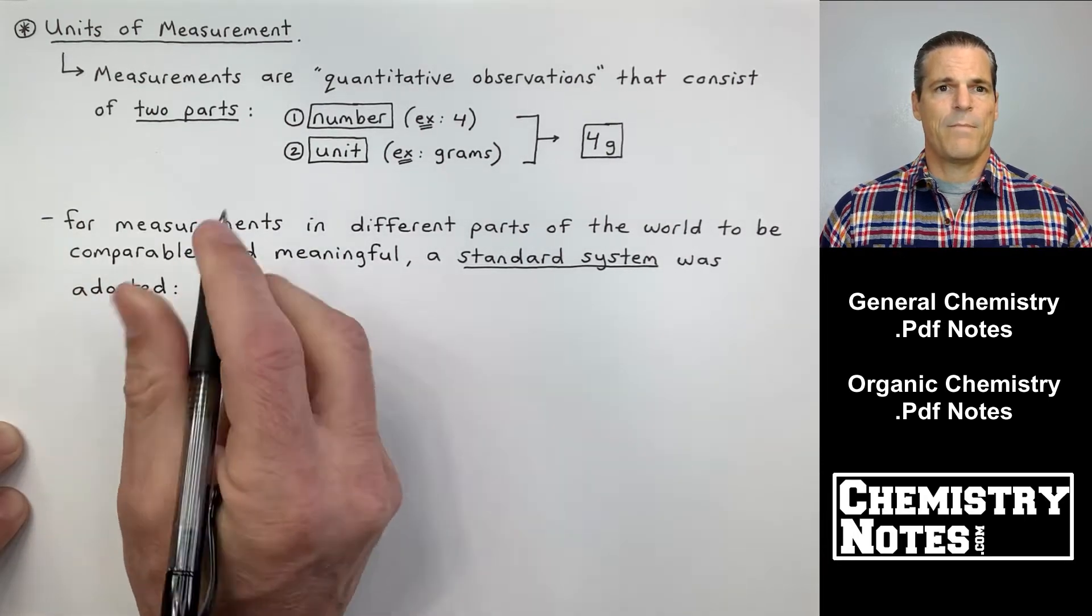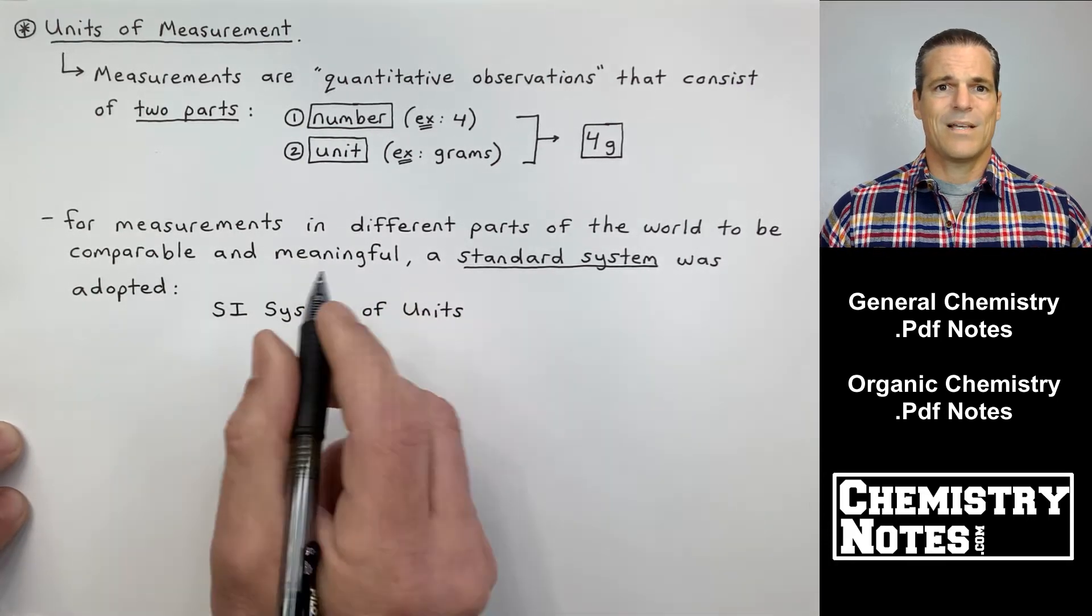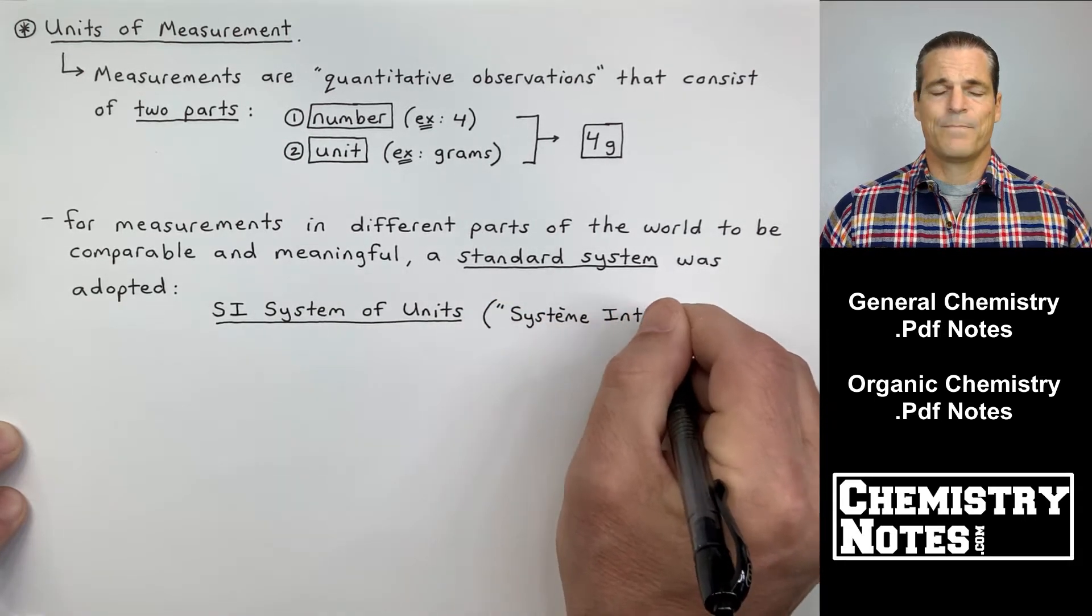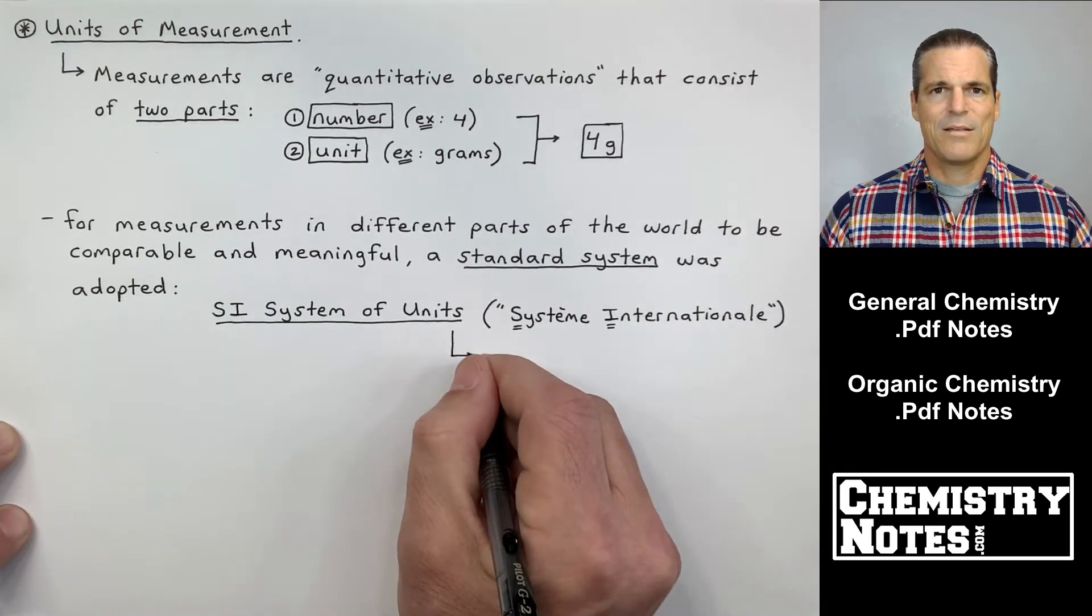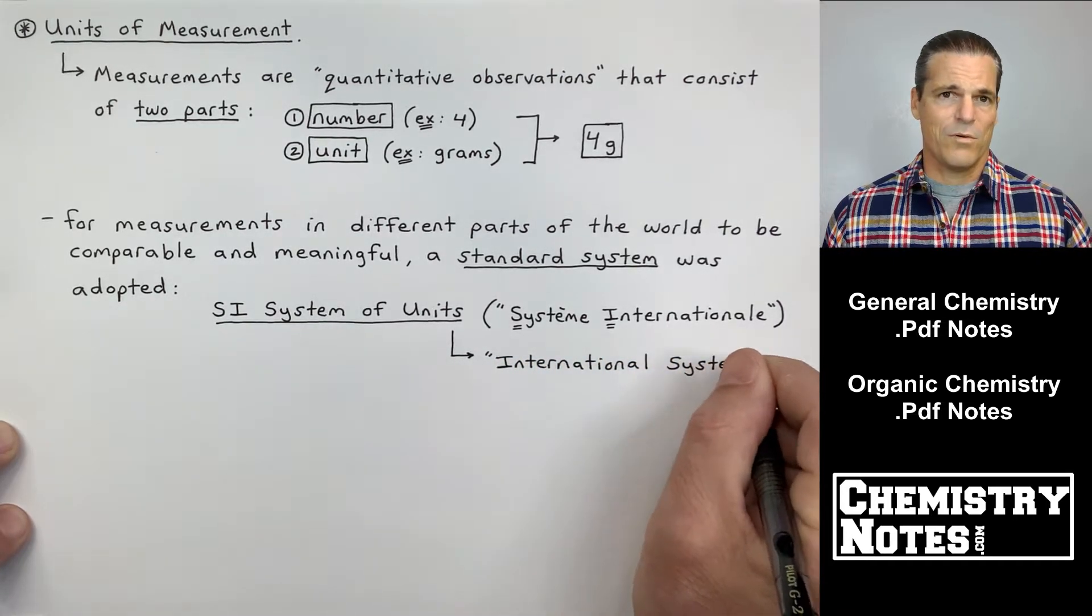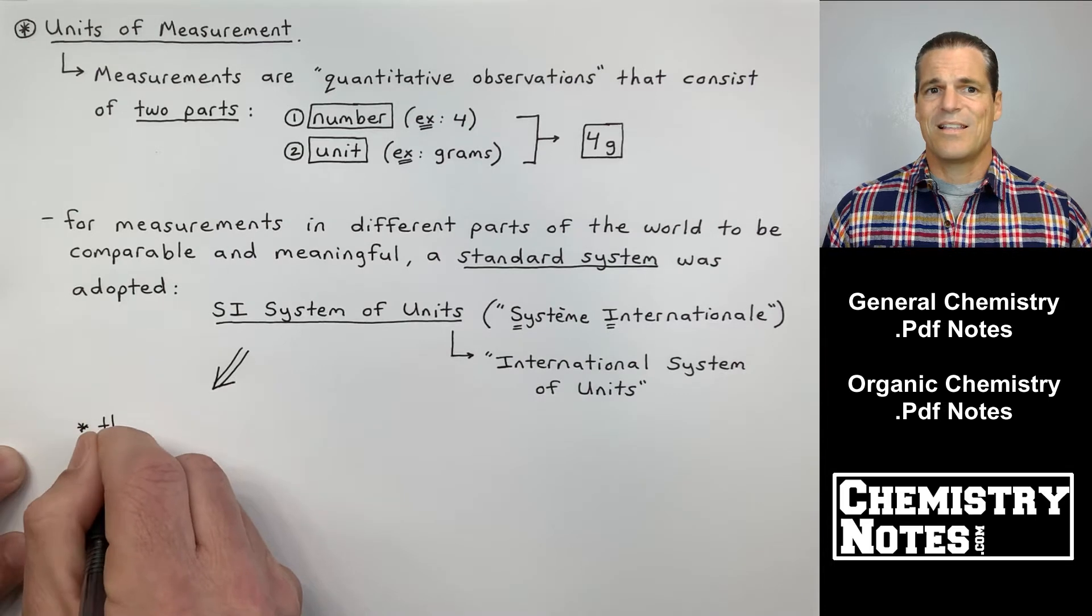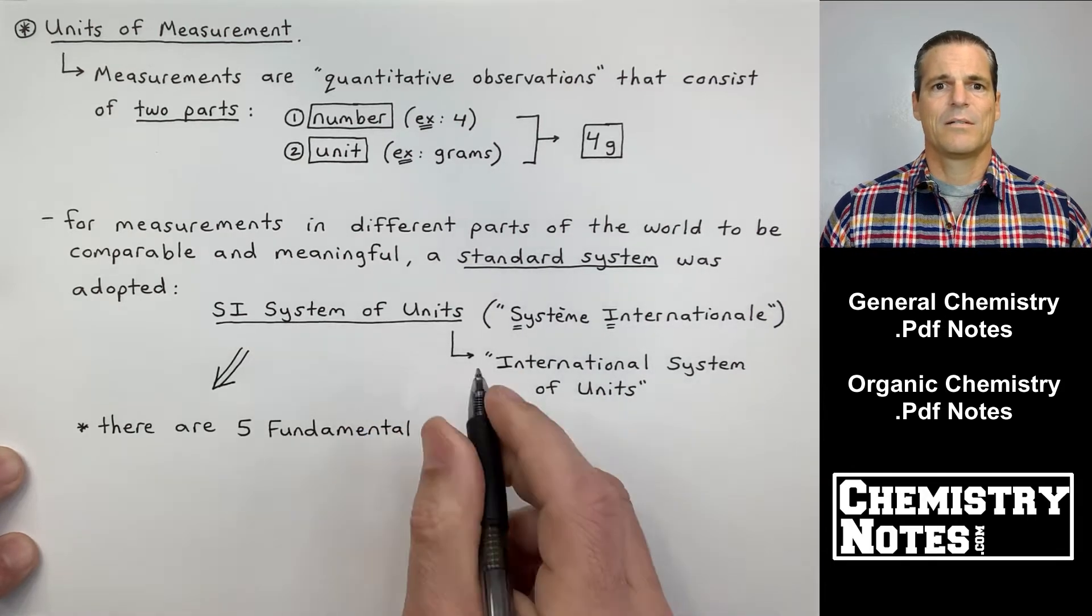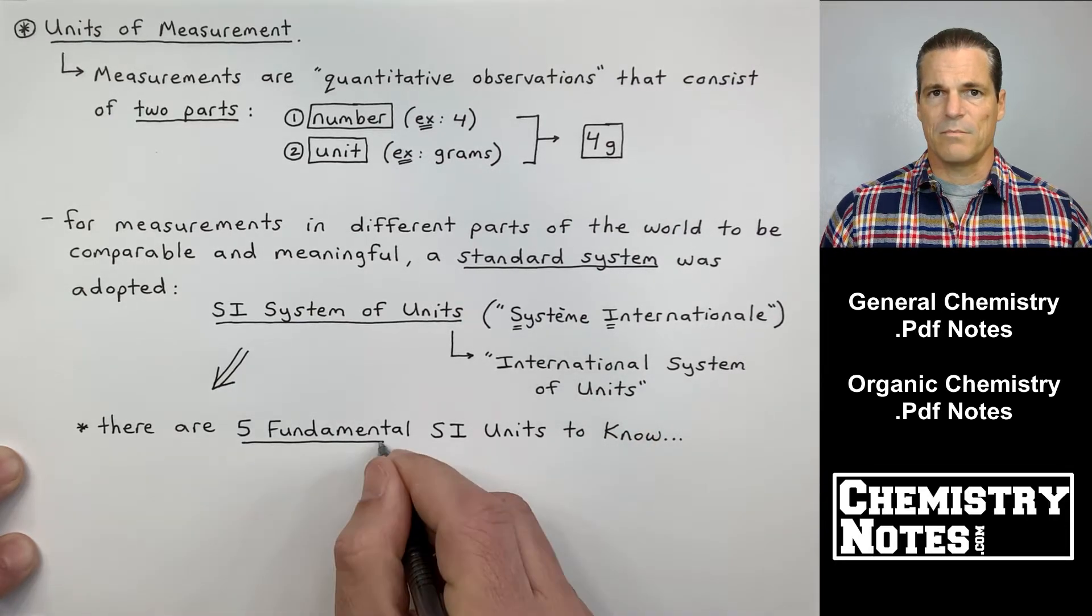For measurements in different parts of the world to be comparable and meaningful, a standard system has been adopted. Now, this system is called the SI system of units. I've heard people say that the SI system is just the metric system today. And I've also heard some people say, well, the SI system is very similar to the metric system with a few differences. And there's different points of view on this. I just basically say to my students, the SI system is very, very similar to the metric system. They have a lot of similarities.